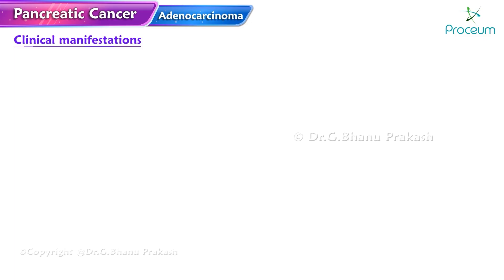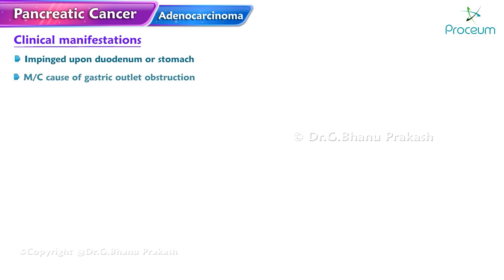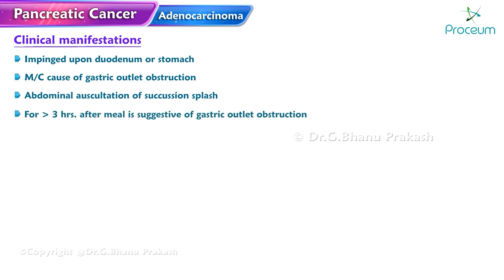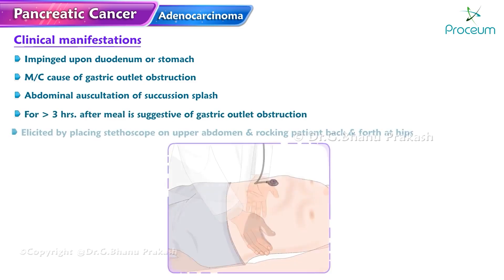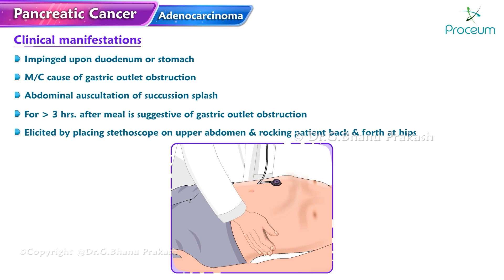Pancreatic adenocarcinoma that has impinged upon the duodenum or stomach is the most common cause of gastric outlet obstruction. Abdominal auscultation of a succussion splash more than three hours after a meal is suggestive of gastric outlet obstruction. This splash is elicited by placing a stethoscope on the upper abdomen and rocking the patient back and forth at the hips.